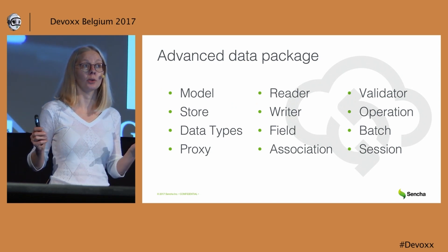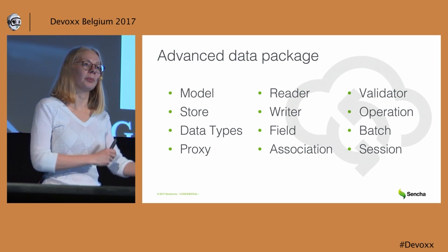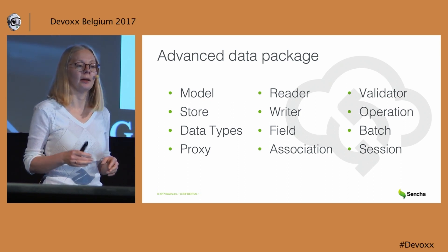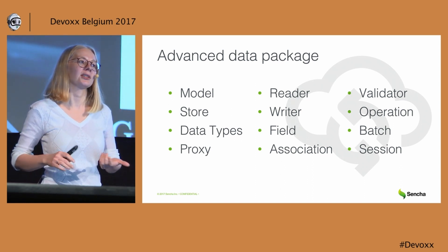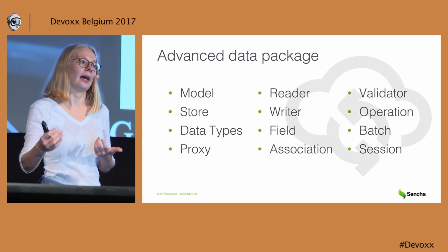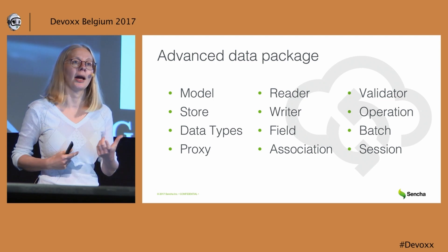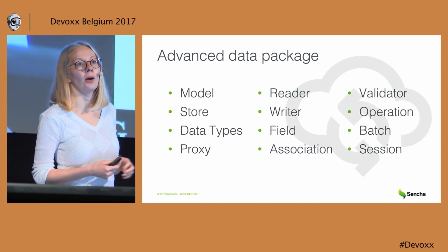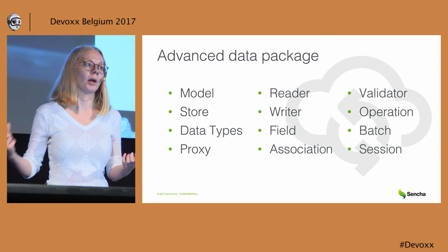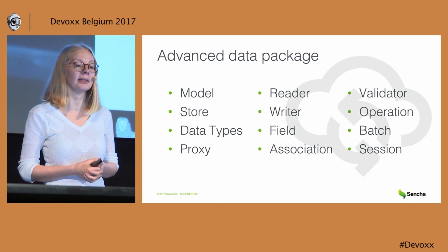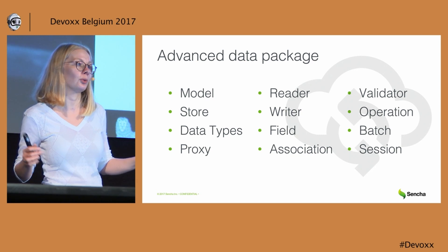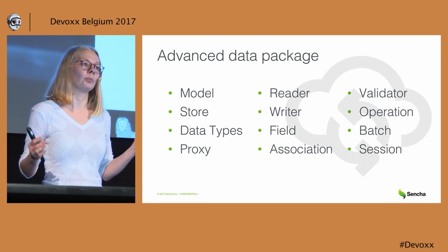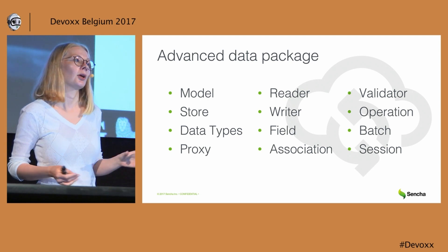The advanced data package: ext.js includes all the classes you may need to handle complex enterprise data — models to describe your data, stores to store your records, field types of different data types, and proxies to communicate with the server using AJAX, REST, or JSONP protocols. Readers and writers can transfer data with the server using JSON, XML, array, or other formats. You can use one-to-one, one-to-many, or many-to-many associations for internal data dependencies, highly customized validators for data constraints, and operations like create, update, destroy, and read can be combined into operation batches and sessions.